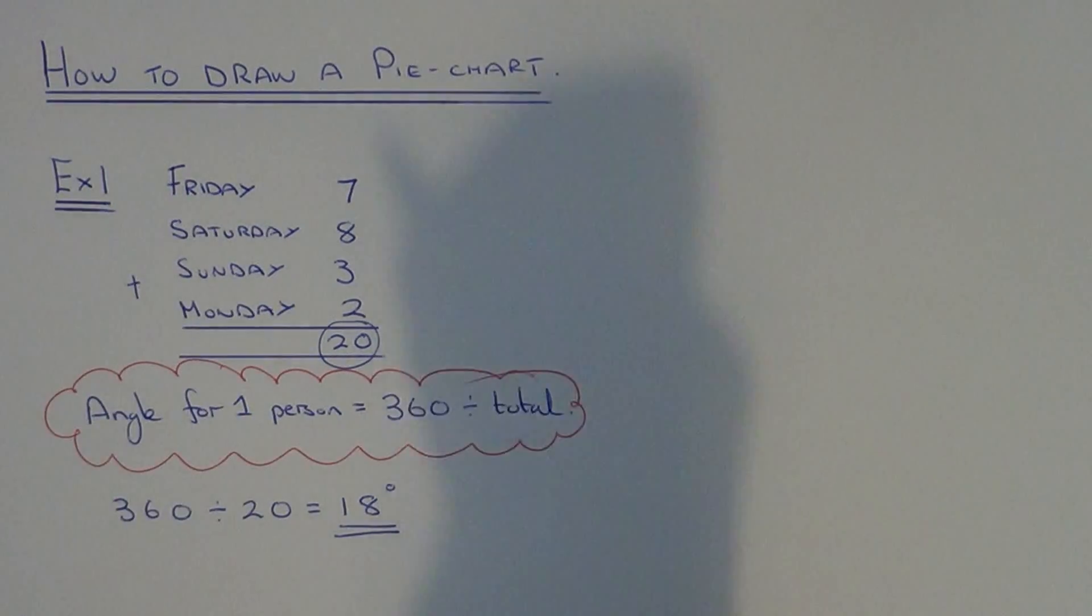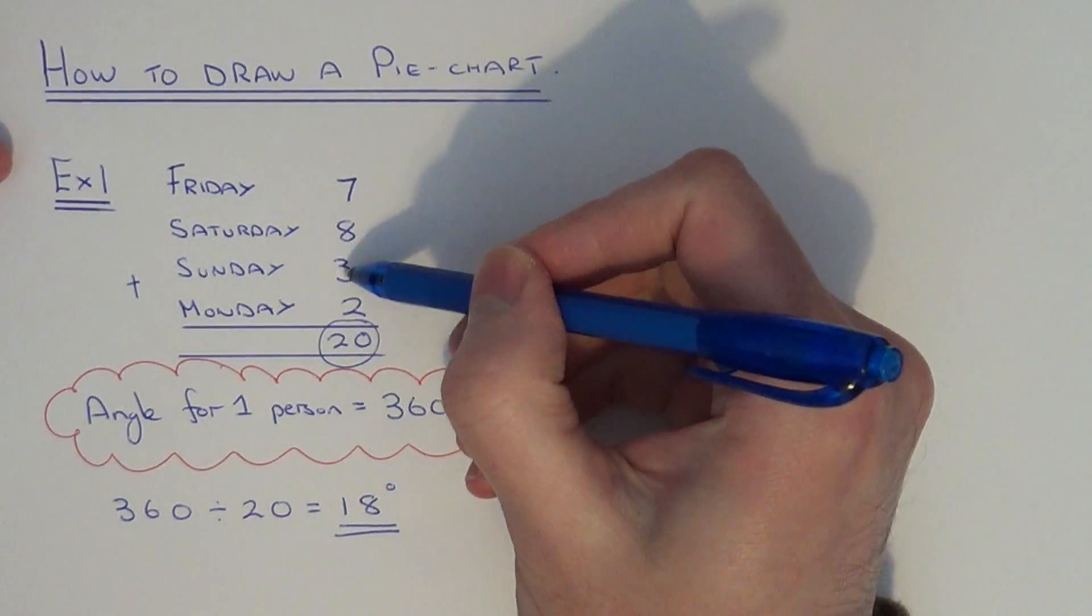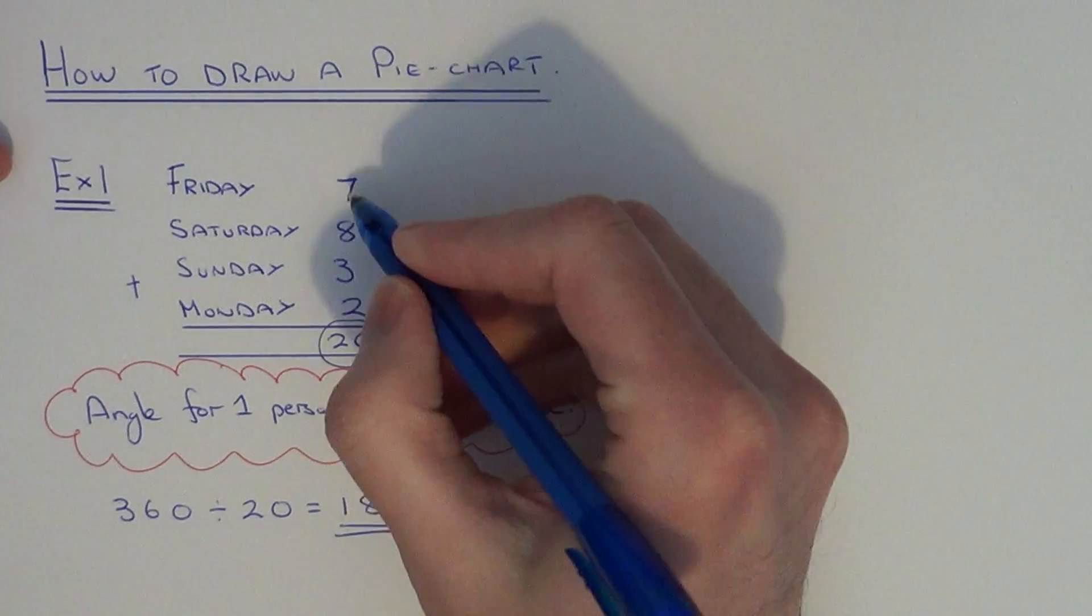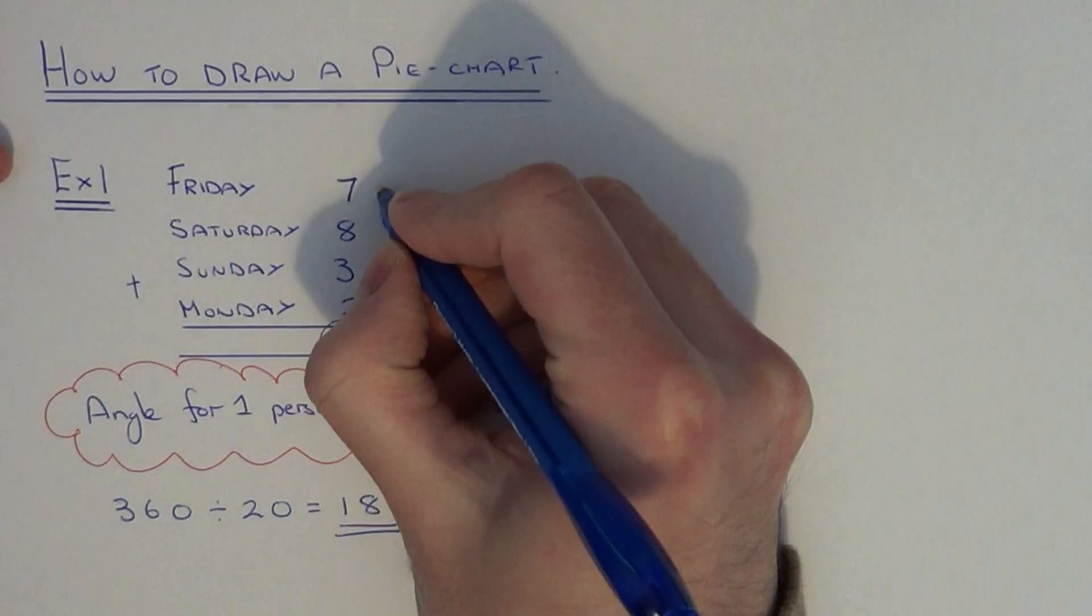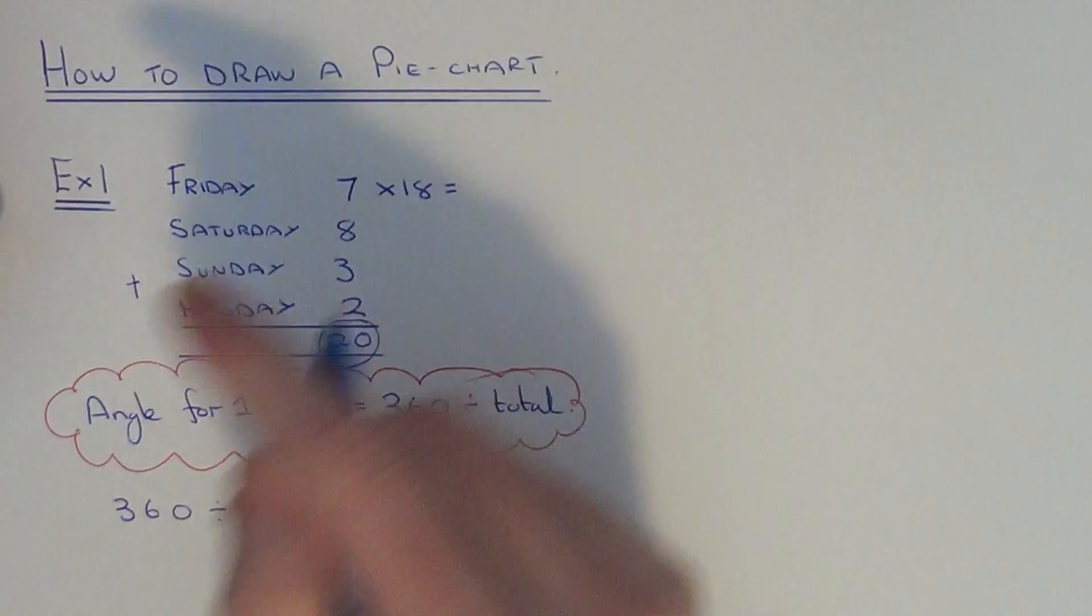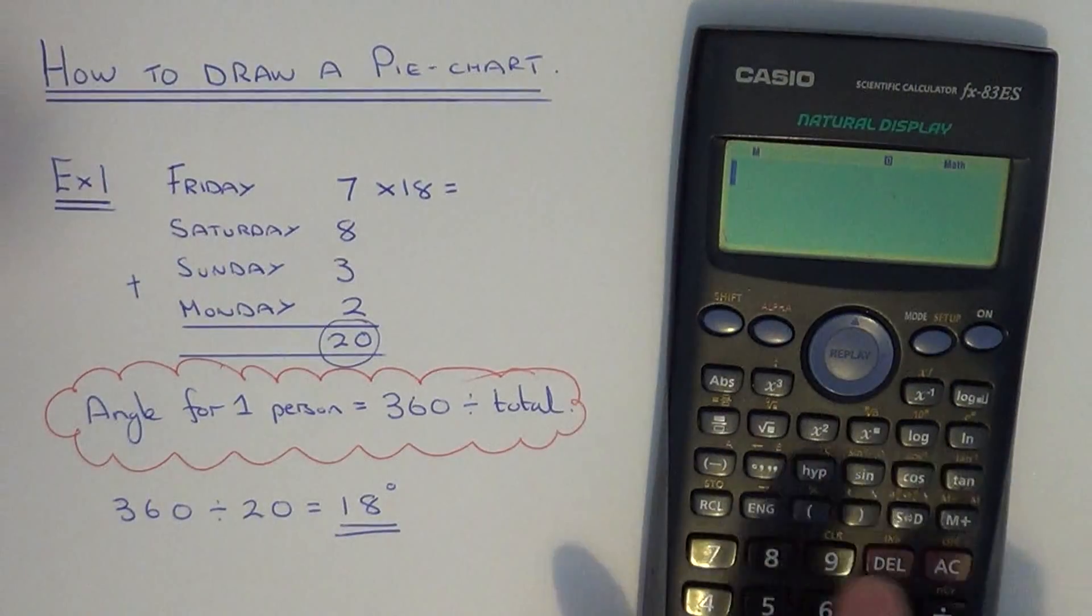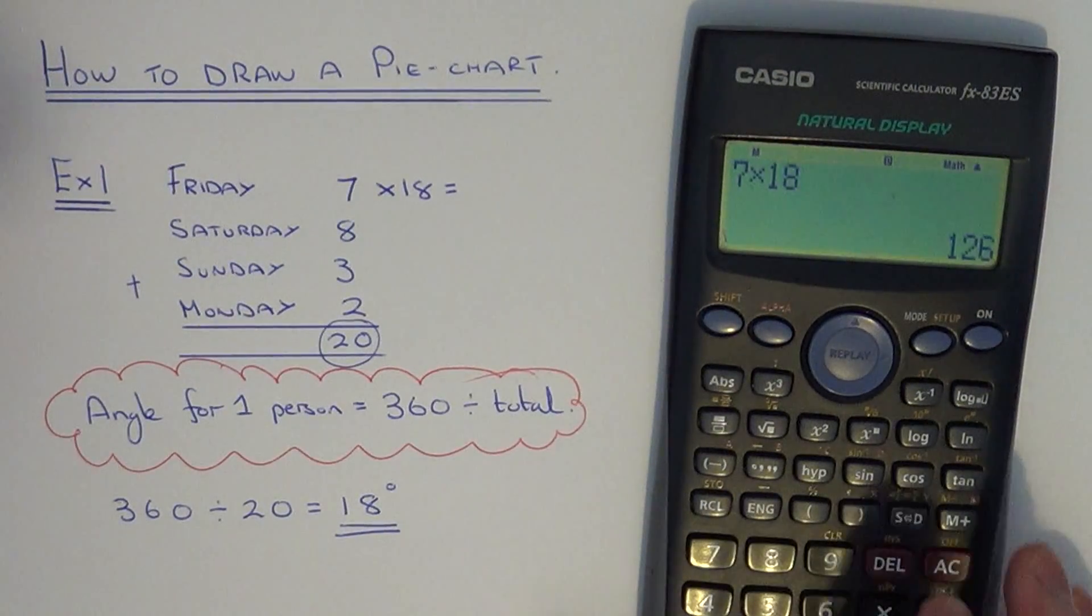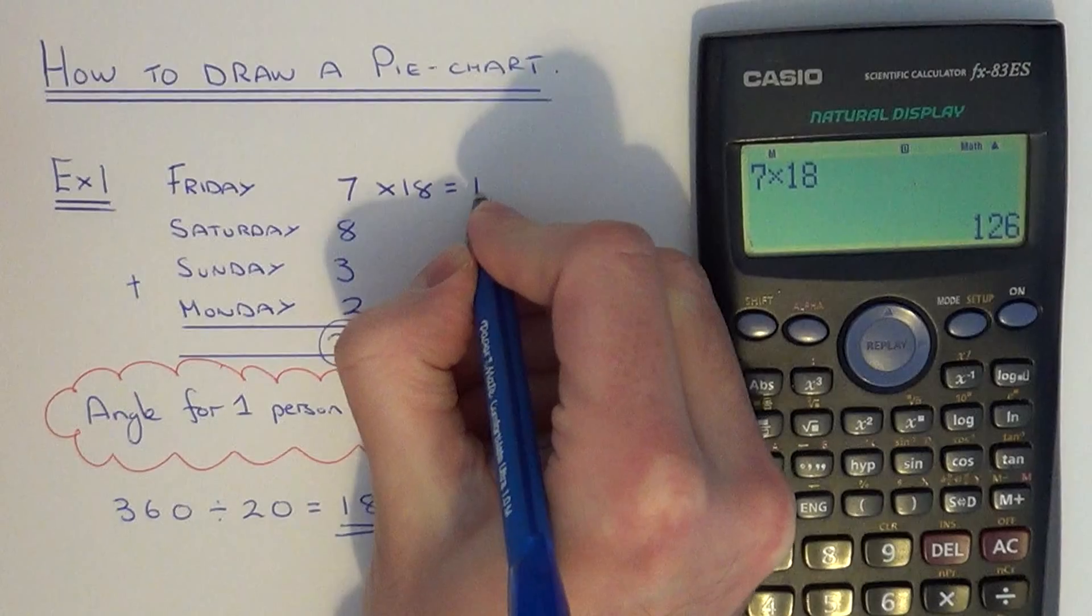So all we need to do now is work out the angle for each day of the week. So 7 people said Friday, so if we do 7 times 18, you can use your calculator to do this, 7 times 18 is 126. Again, 8 times 18 is 144.